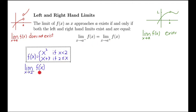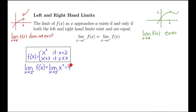Let's take the limit from the left: x approaches two minus. That two minus means we consider x less than two, so we use the x squared piece. We just plug in two for x and get two squared, which is equal to four. So the limit from the left is four.